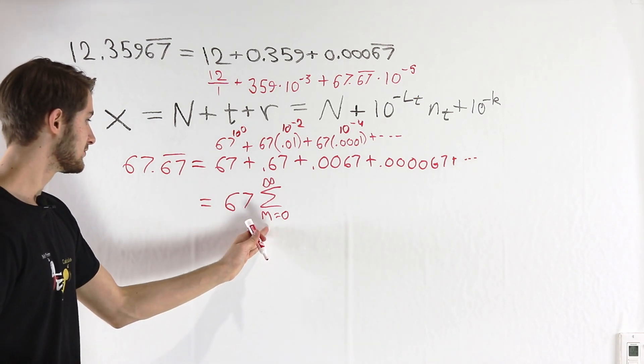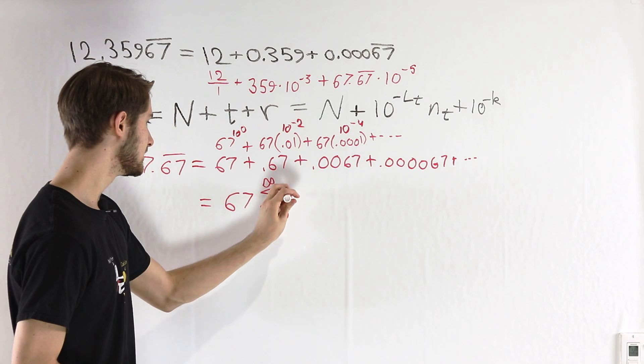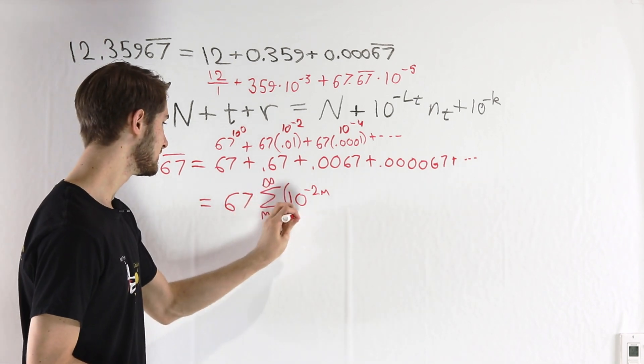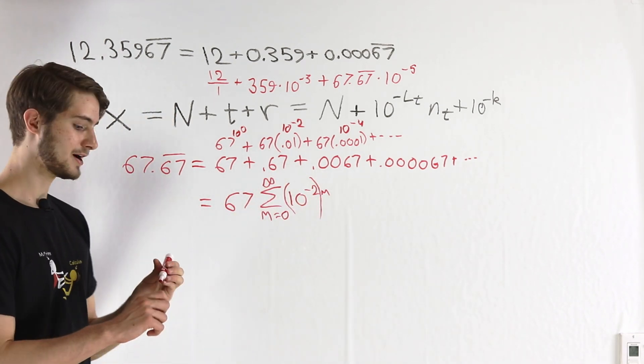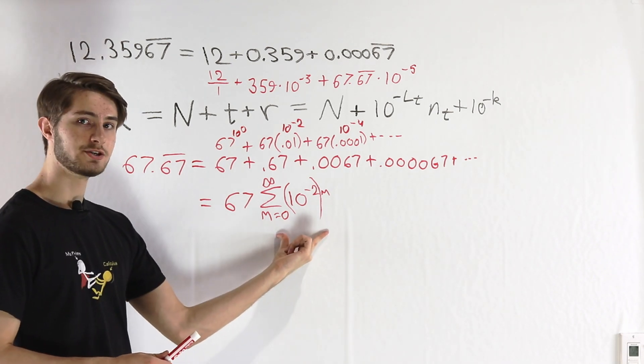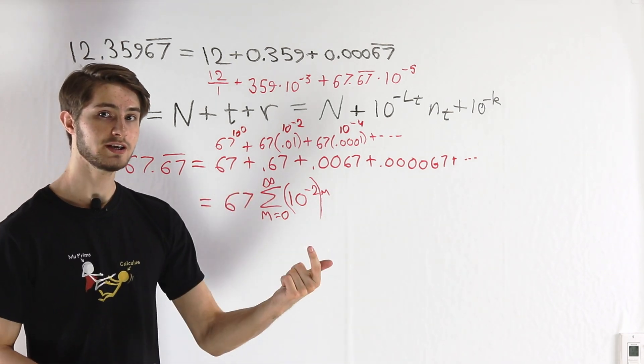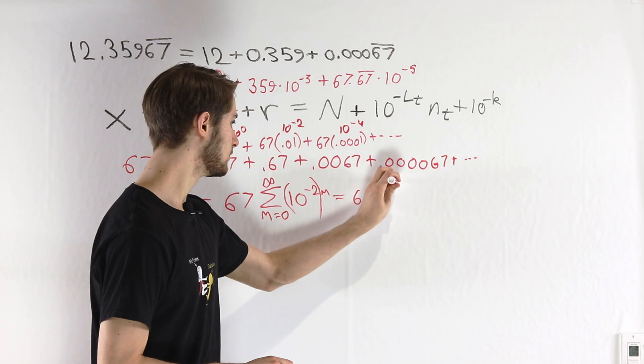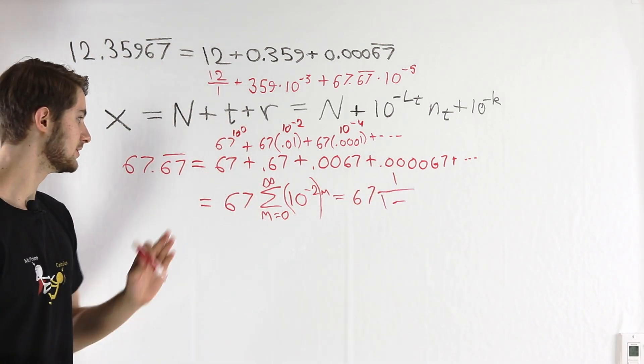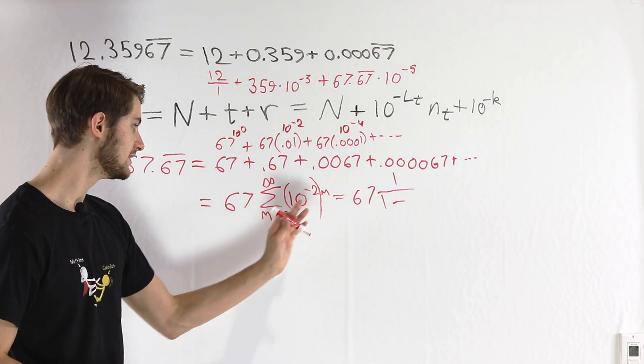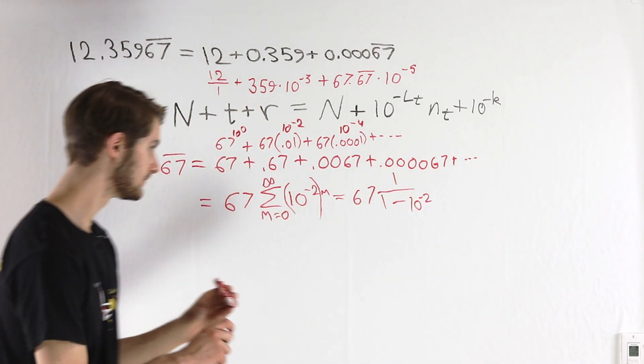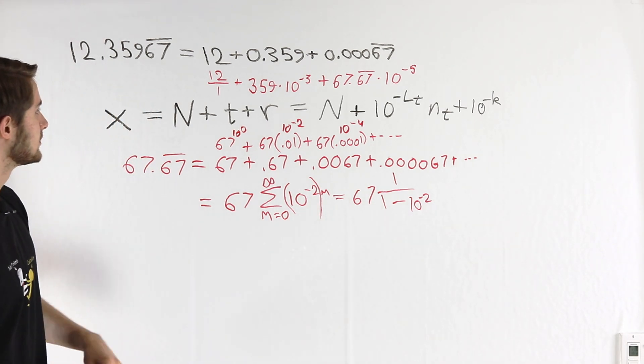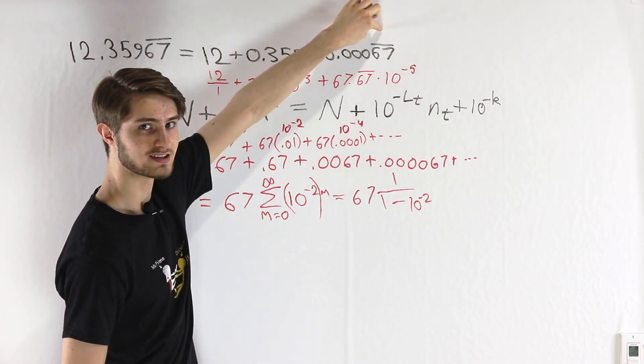Therefore, our sum is going to be from m equals 0 to infinity of 10 to the negative 2 times m. Or equivalently, 10 to the negative 2 to the power of m. This is an infinite geometric series, which means that we can evaluate it with the methods that we know. This geometric series must equal 1 over 1 minus the common ratio r. And in this case, the common ratio is 10 to the negative 2. So that's what our repeating decimal expansion looks like for 0.00067 repeating.